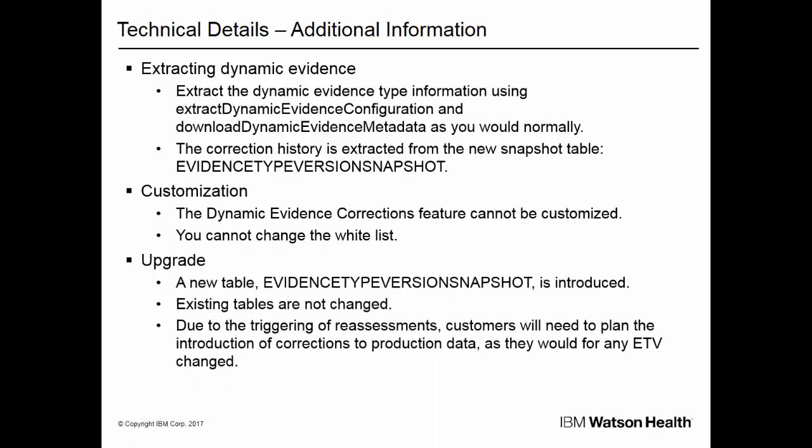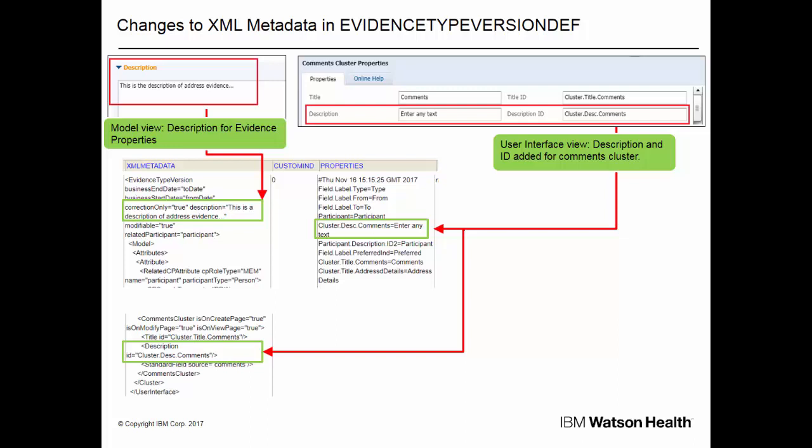A new entity named Evidence Type Version Snapshot is introduced. There are no changes to existing tables. Note that, due to the triggering of reassessments, customers will need to plan the introduction of corrections to production data, as they would for any ETV change. The graphic shows the changes made to the XML metadata in the Evidence Type Version Def table. In the model view, a description is added for the evidence properties — the description attribute is updated in the model part of the metadata. The graphic on the right shows a description that was added for the comments cluster. An ID was also specified, and a new description element is added to the user interface part of the metadata. The text for the cluster description comments is also added to the properties.